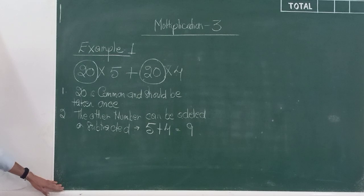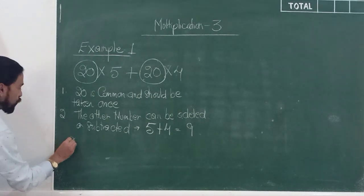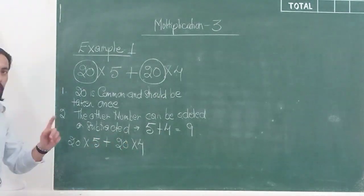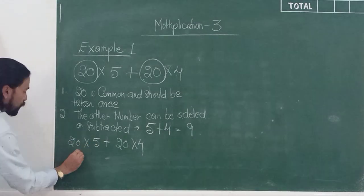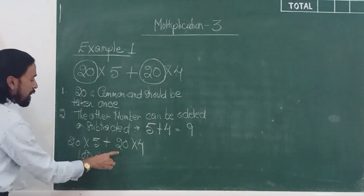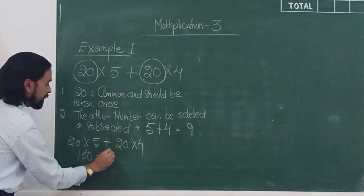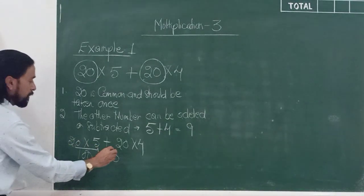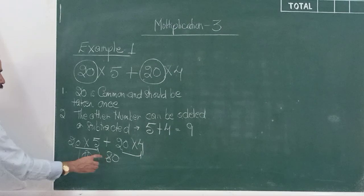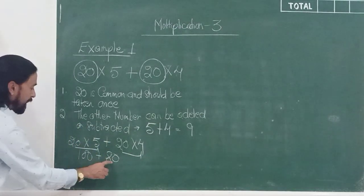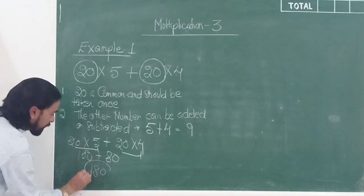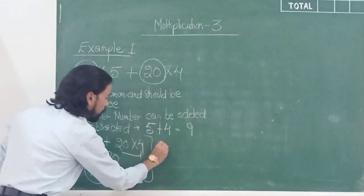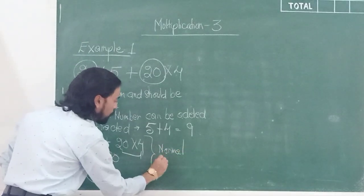Let me do the sum in the methodical or normal way first. If I have 20 into 5 plus 20 into 4, I would normally multiply 20 by 5 to get 100, then multiply 20 by 4 to get 80. Because the addition sign is in between, I add 100 and 80 to get 180. This is the normal working.